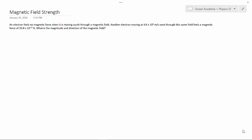Another electron moving at 4.6 times 10 to the power of 6 meters per second west through the same field feels a magnetic force of 10.8 times 10 to the negative 14 newtons. What is the magnitude and direction of the magnetic field?